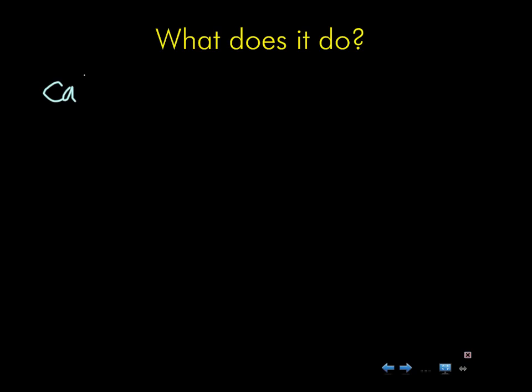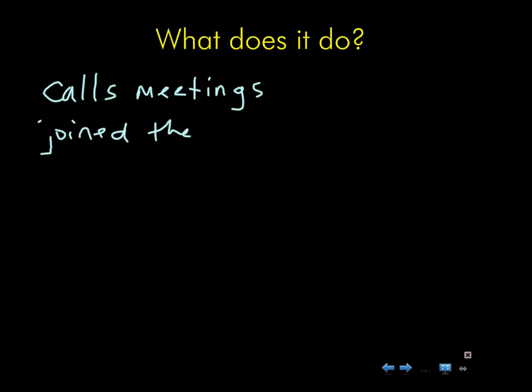The conch calls meetings at the beginning, and it joins the boys when they had never met before. So it calls meetings regularly, and at the beginning it called them together when they were chaotically dispersed throughout the island. The fire also acts as a signal. Let's stay with the conch though — it represents power.